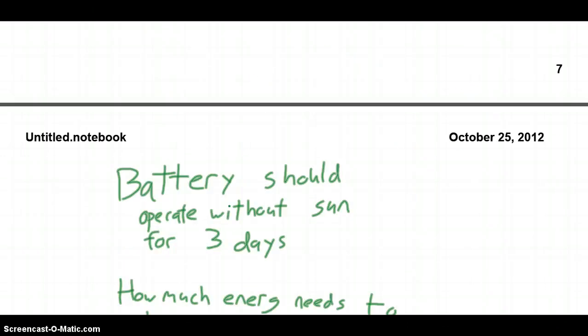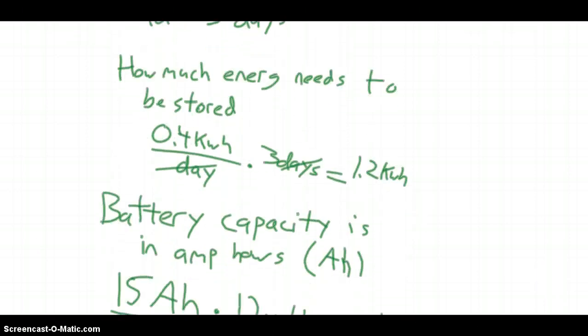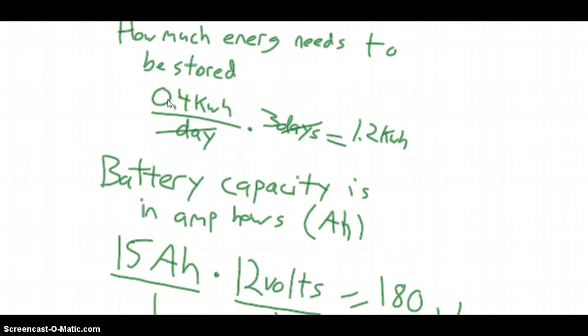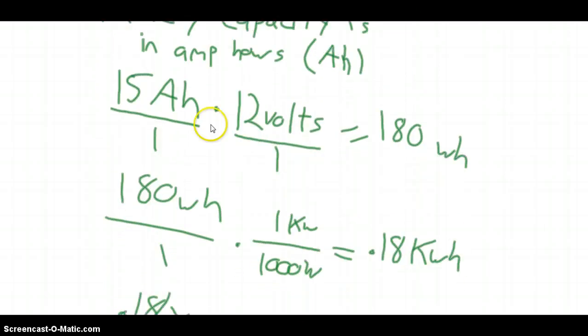So, the big thing with batteries is you need to choose how long they should be autonomous, which means how long they should operate without sunlight. So this is going to depend on your climate, but we assume 3 days. And then we need to figure out how much energy needs to be stored to power our light bulb for 3 days without any sunlight. So in this case, we need to store 1.2 kilowatt hours. What's weird about batteries, though, is that battery capacity is measured in amp hours. So we have to somehow figure out how many kilowatt hours are in one of our batteries. So we assume one of our batteries is 15 amp hours.